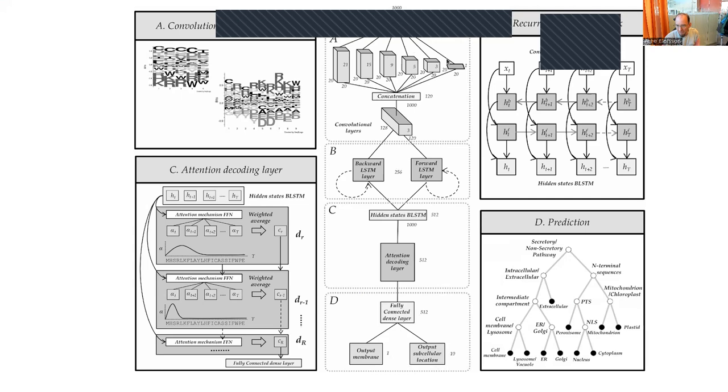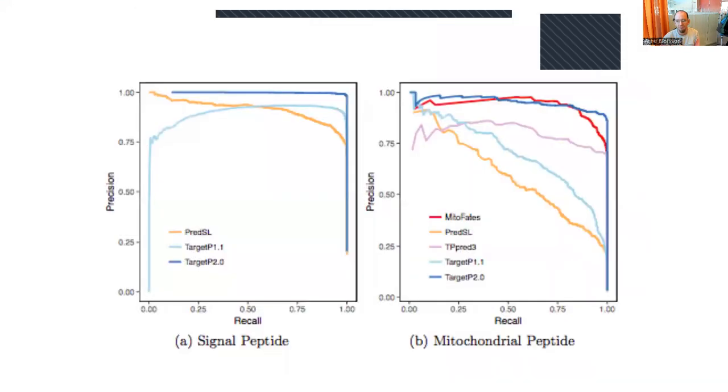For some cases like mitochondrial targeting, it's easy to recognize signals in the N-terminus. Nuclear localization is much more diverse and harder to identify. The network learns these features itself without hard coding.